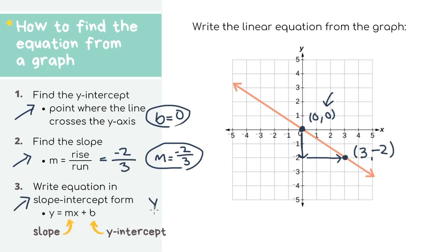Step three, we have y equals our slope, which is negative 2 over 3, x, plus our y-intercept, which is 0. So all cleaned up, our final equation for the graph is just y equals negative 2 over 3 x.